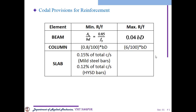There is a codal provision for reinforcement. The minimum reinforcement for a beam is given by Ast / (BD) = 0.85 / Fy, and maximum reinforcement is 0.04 × B × D. For columns, minimum reinforcement is given by 0.8/100 × B × D, and the maximum is 6% of the overall column section. For slabs, 0.15% of the total cross-sectional area if using mild steel bars, and 0.12% of the cross-sectional area if using HYSD bars.